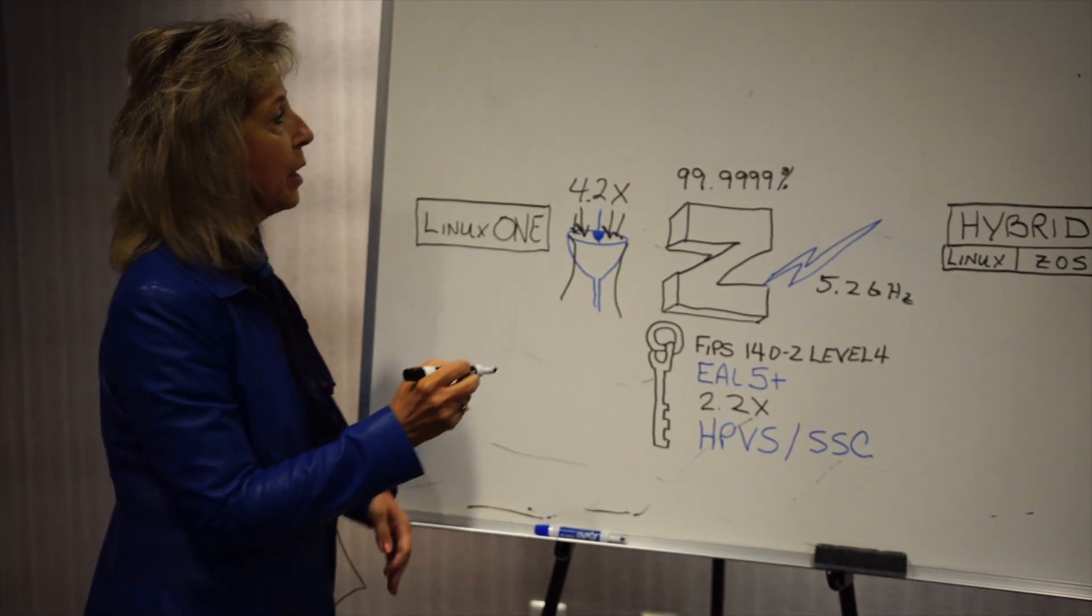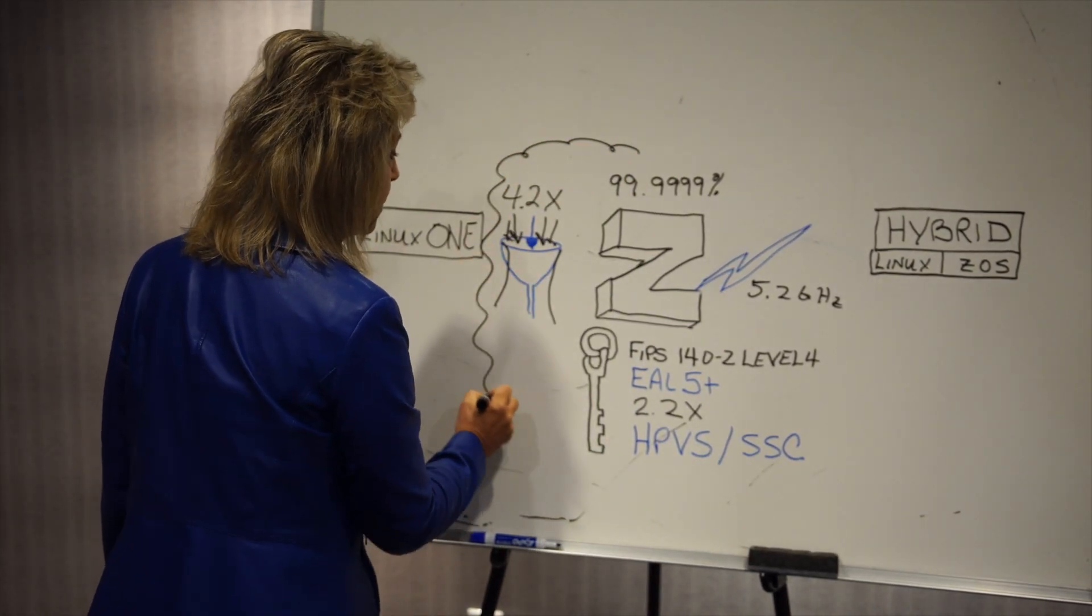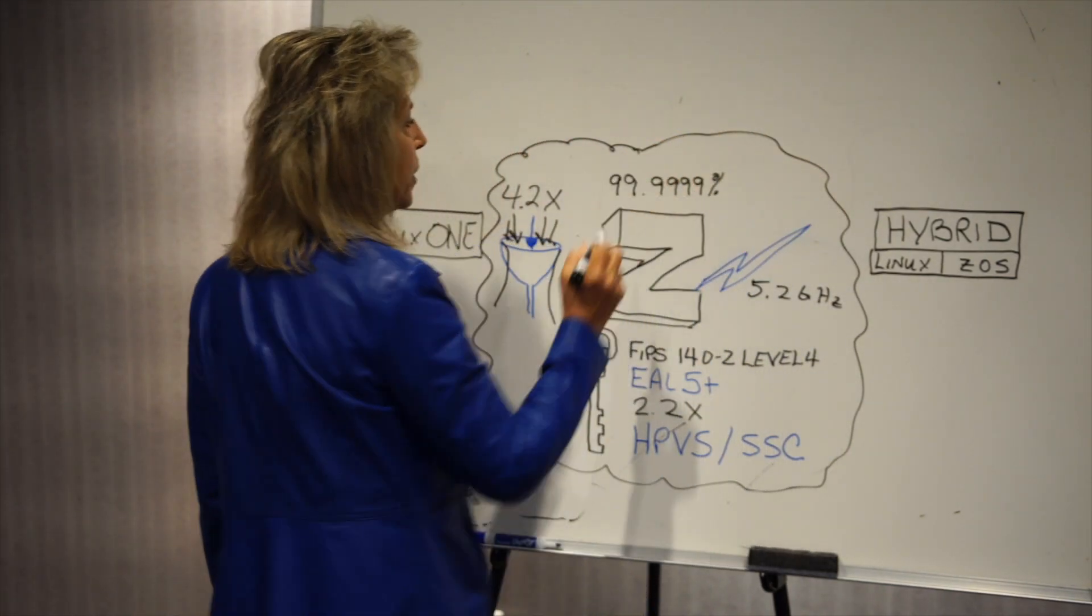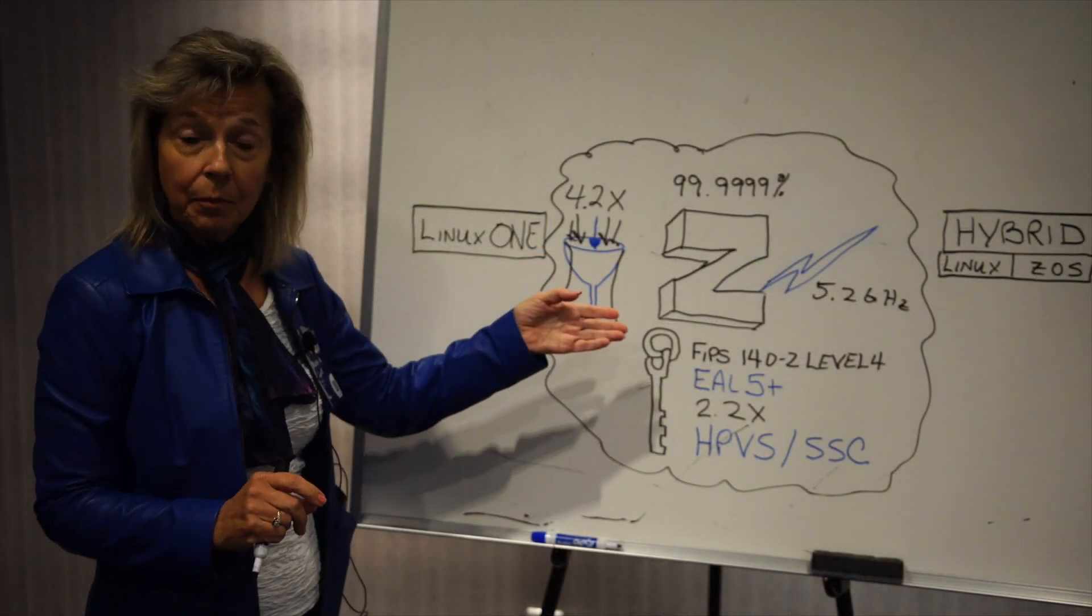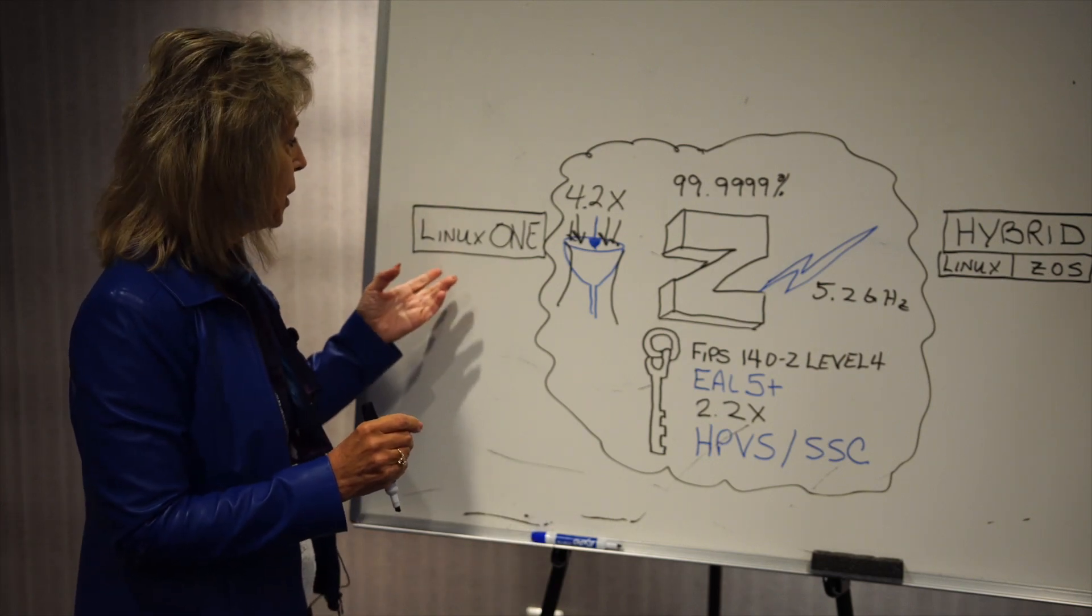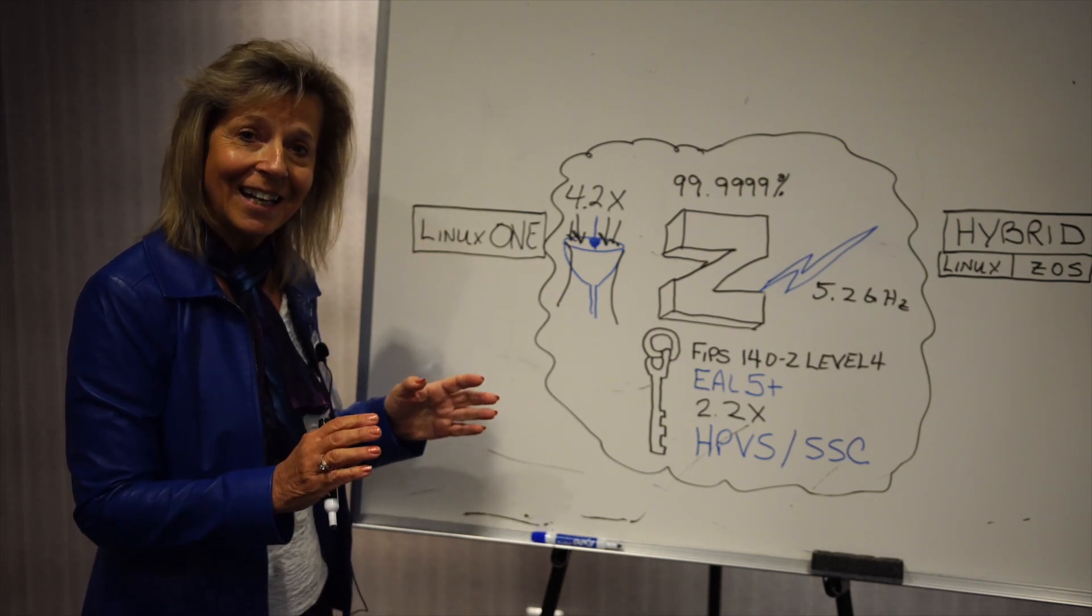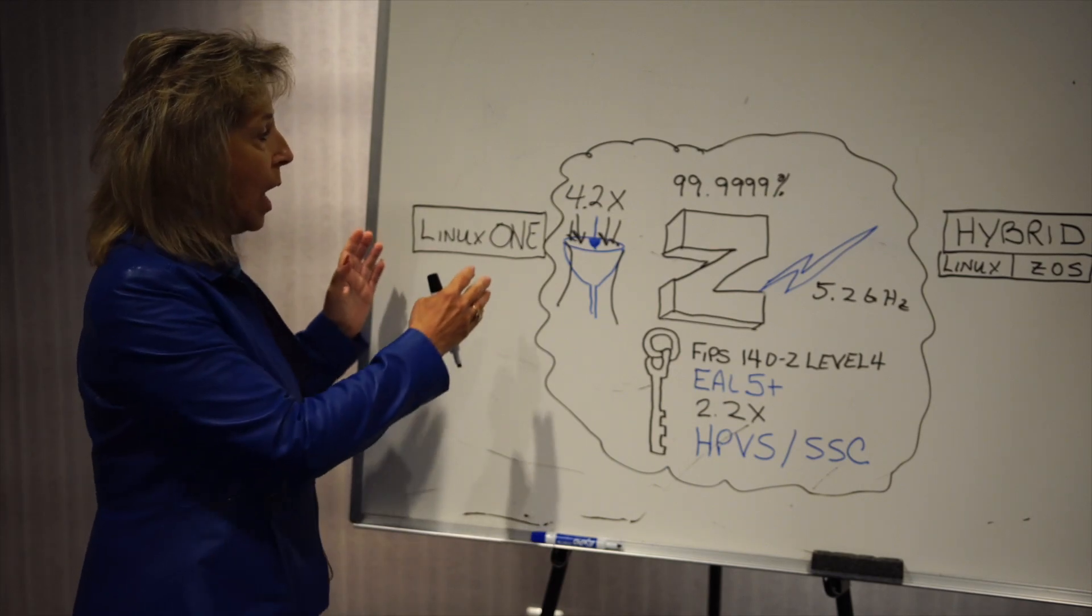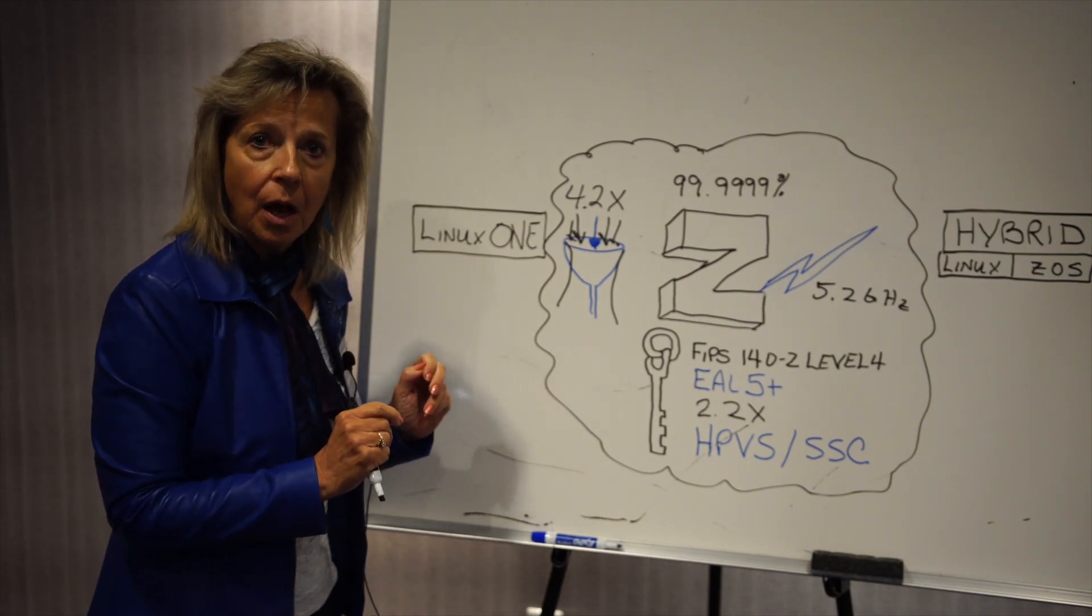So this is some of the characteristics. Certainly not all but imagine putting all of this in your cloud on premise and having all of these capabilities. So the IBM Z server comes in two flavors. The first one is the Linux one server. The Linux one server is a dedicated Linux only Z server. And it has all of these wonderful components of the Z.